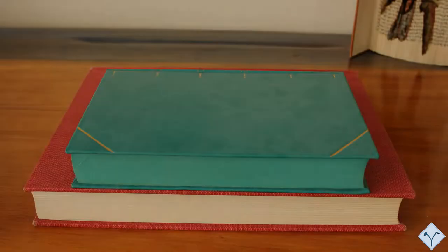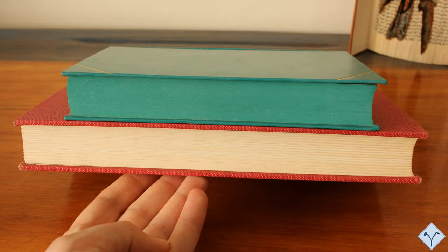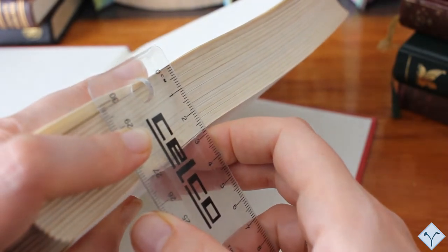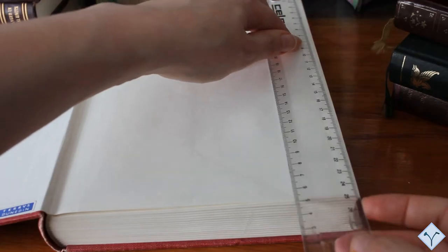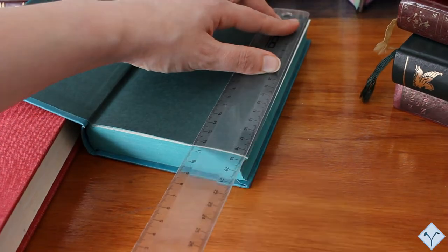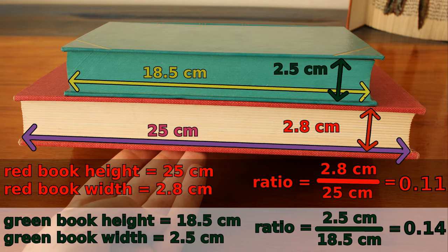Here I have two books. Look at them and try to guess which one is thicker, meaning on which one the book art pattern would be less stretched, less elongated. The first book is 2.8cm wide and 25cm tall. The second one is 2.5cm wide and 18.5cm tall. It looks like the first one is slightly wider than the second one. But when we calculate the ratio of width to height, meaning we divide the width by the height, we see that the ratio of the first one is 0.11, whereas the ratio of the second one is 0.14. This means that for our purposes, the second book is thicker than the first one, even though the first one is wider.